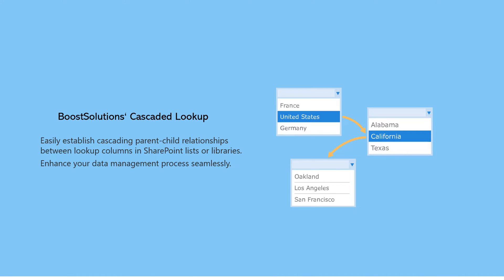Hello everyone. Welcome to our video. Today, we're going to introduce the product Cascaded Lookup. The product enables you to create cascading lookup columns in your SharePoint lists — a smart tool when you're dealing with several interrelated lists and want to select your options based on previous selections.